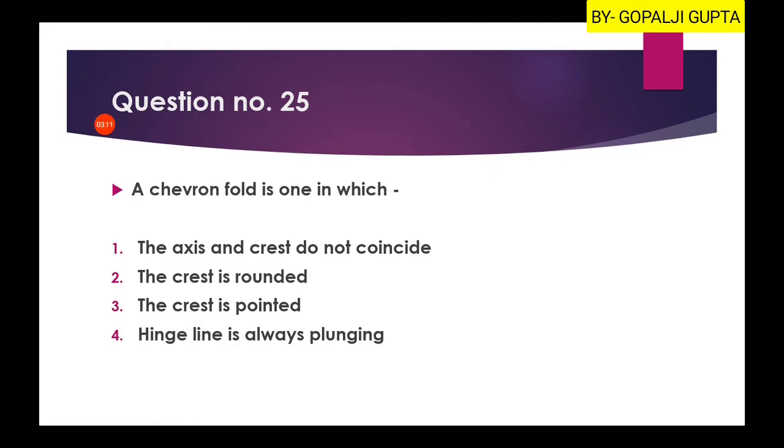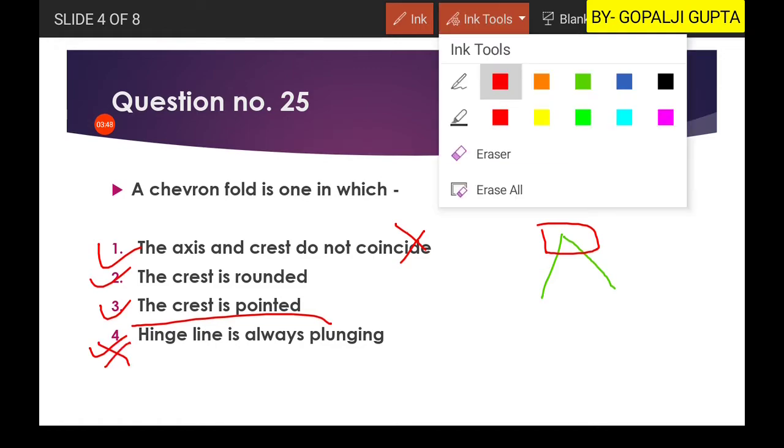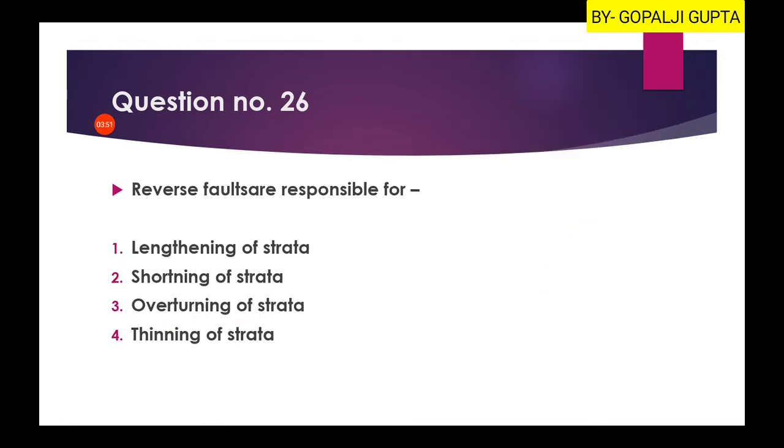Next question: a chevron fold is found in which? A chevron fold looks something like this in which the crest area is pointed. So in option number 3 it is said that the crest area is pointed. While other options are crest is rounded - no, it is not rounded. The axis and crest do not coincide - this is also wrong. And hinge line is always plunging. Hinge line can be plunged, it can be horizontal, it can be vertical. So this is also not true. Only option number 3 is true, and hence third option will be our right answer.